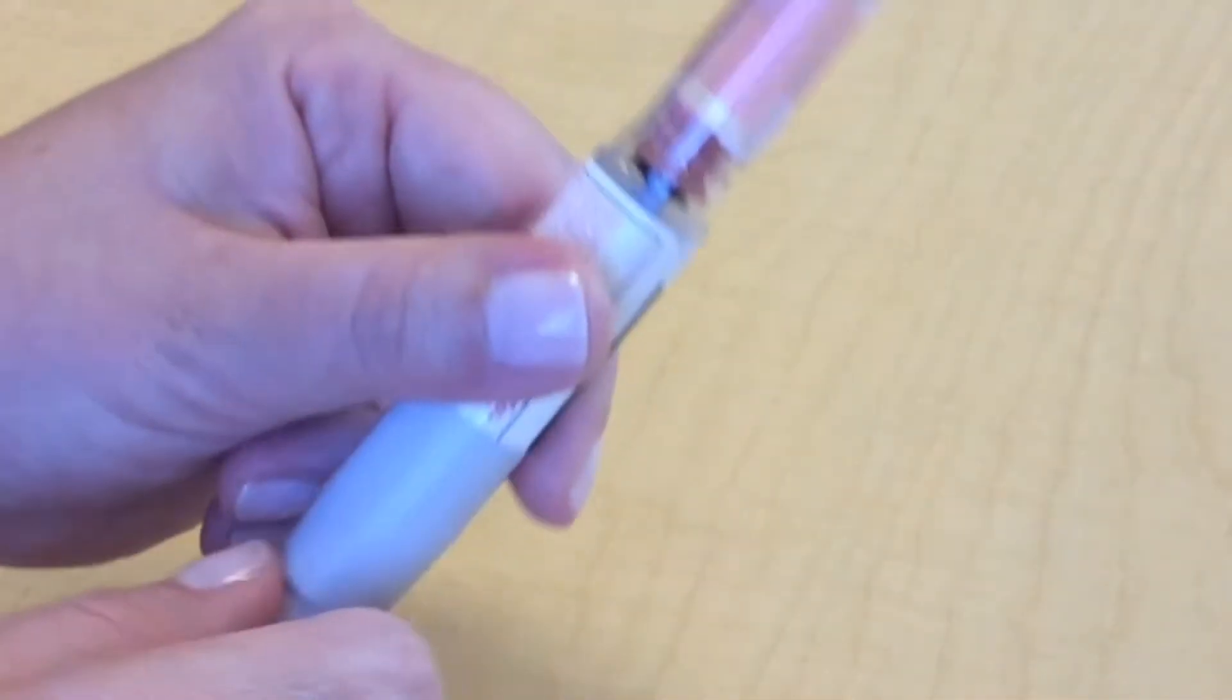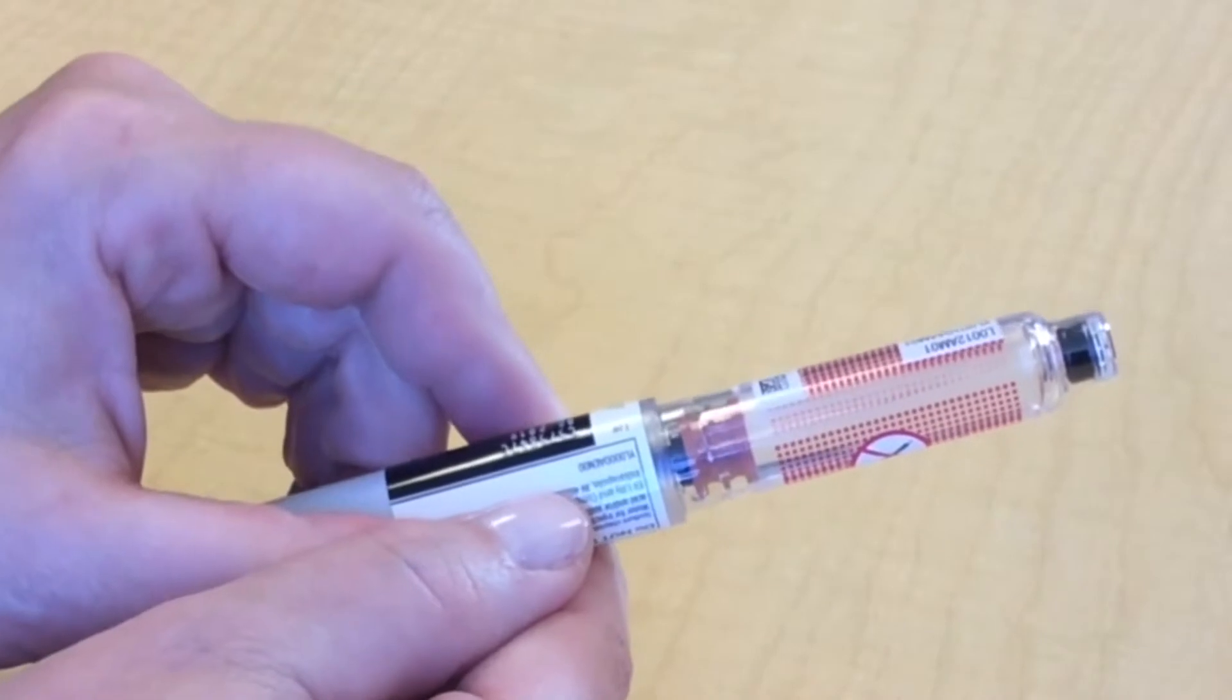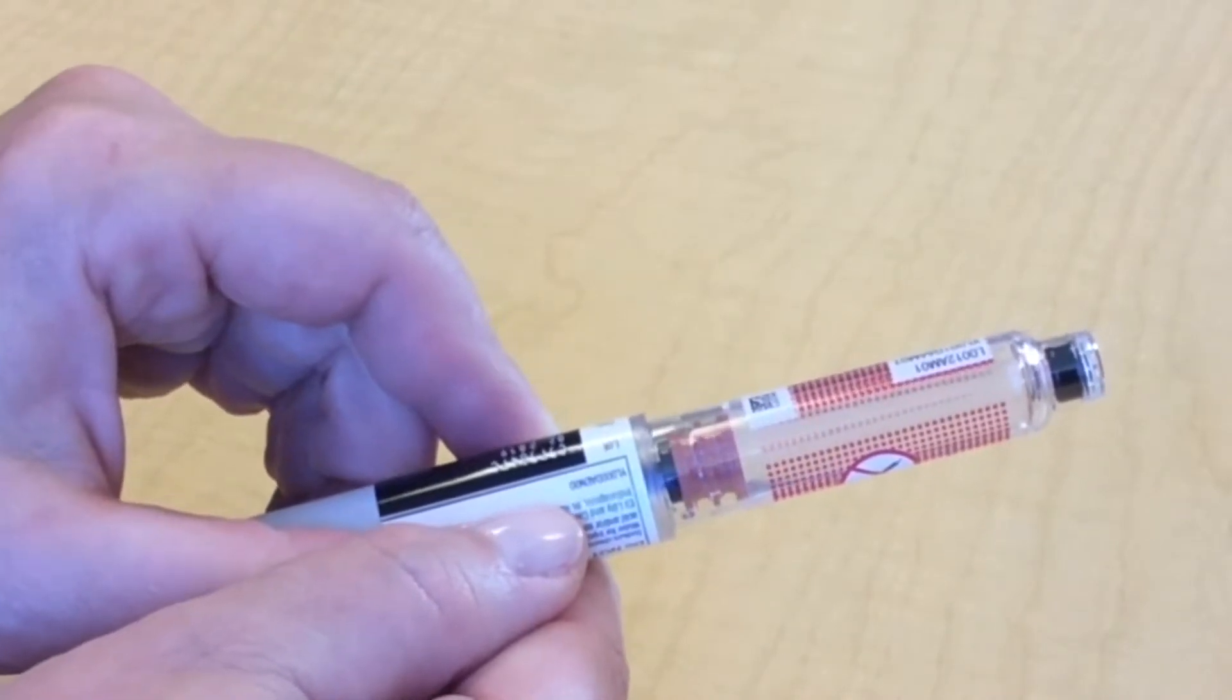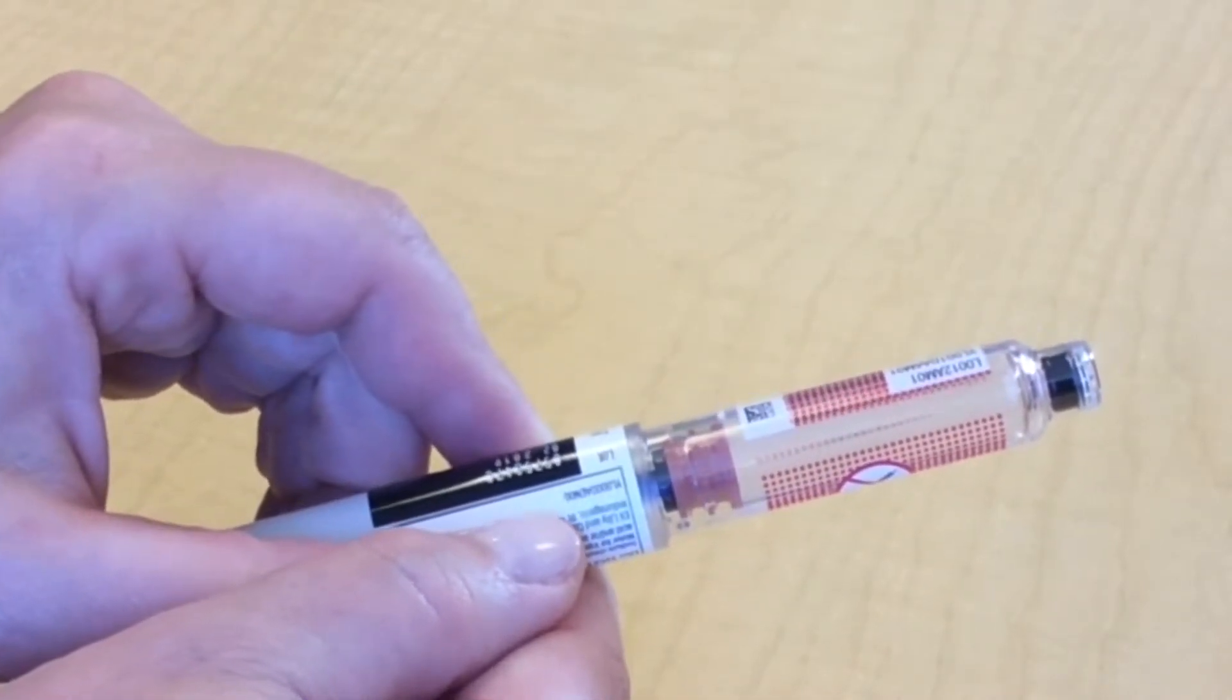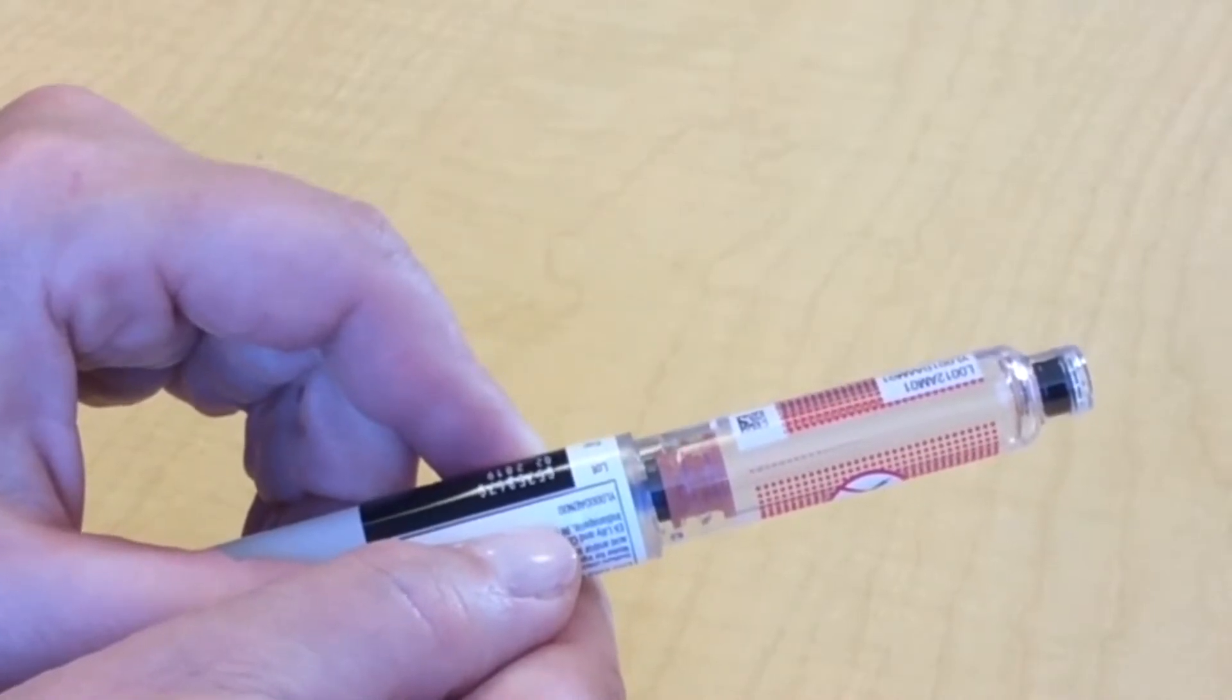Now, inspect your insulin by looking at the insulin. Make sure you know what your insulin should look like. If you're unsure, talk to your healthcare provider, certified diabetes educator, pharmacist, or check the package insert to find out.